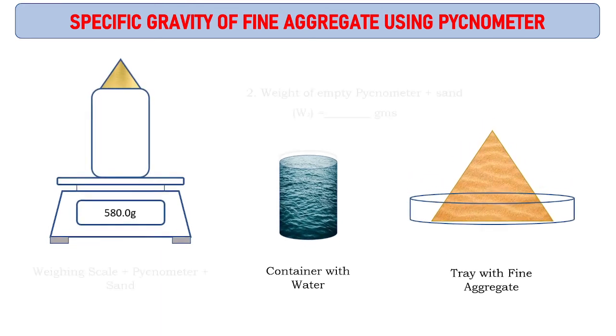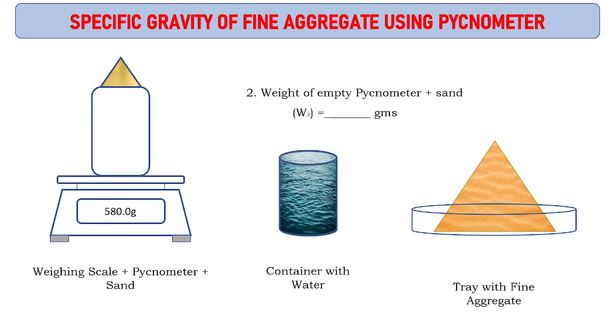Now we are going to take sand and pycnometer weight. From the tray, we are adding fine aggregate in the pycnometer: weighing scale plus pycnometer plus sand. One third of the jar will be filled with fine aggregate. The weight changes to 1050 grams, which is weight of empty pycnometer plus sand.